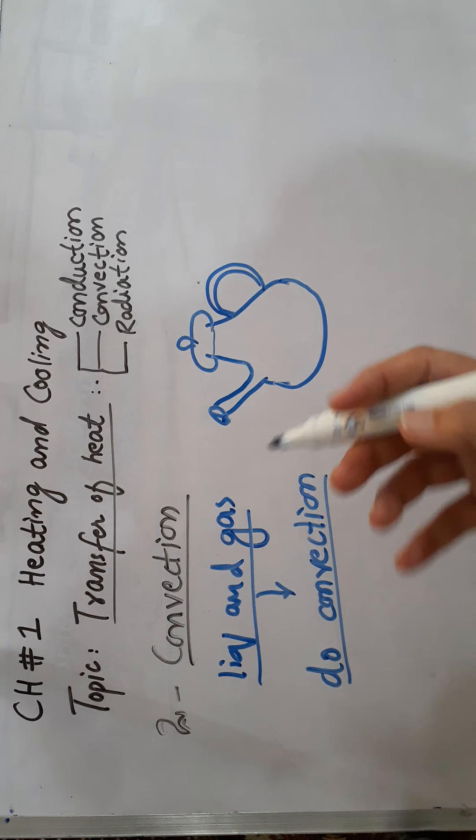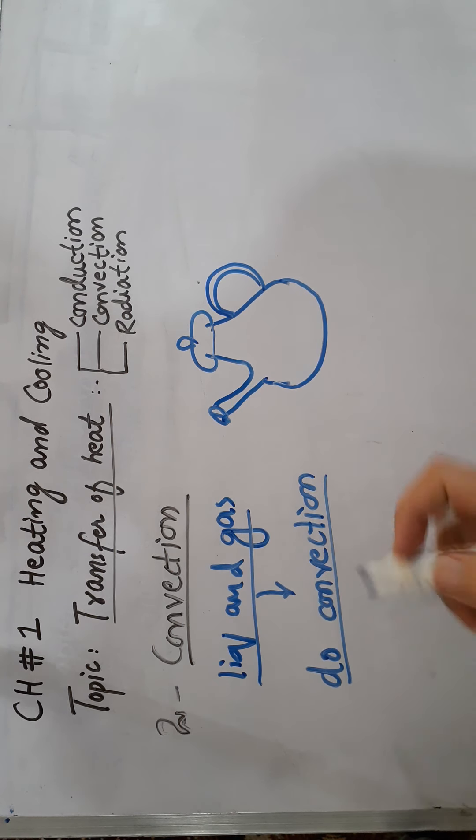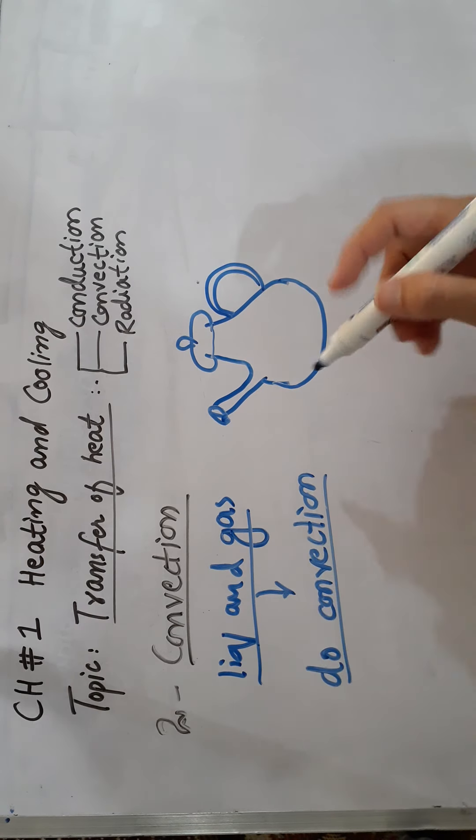Solids do not do convection because their particles are tightly packed. In convection, particles must be freely moved. By moving, they can transfer heat from one area to another area.